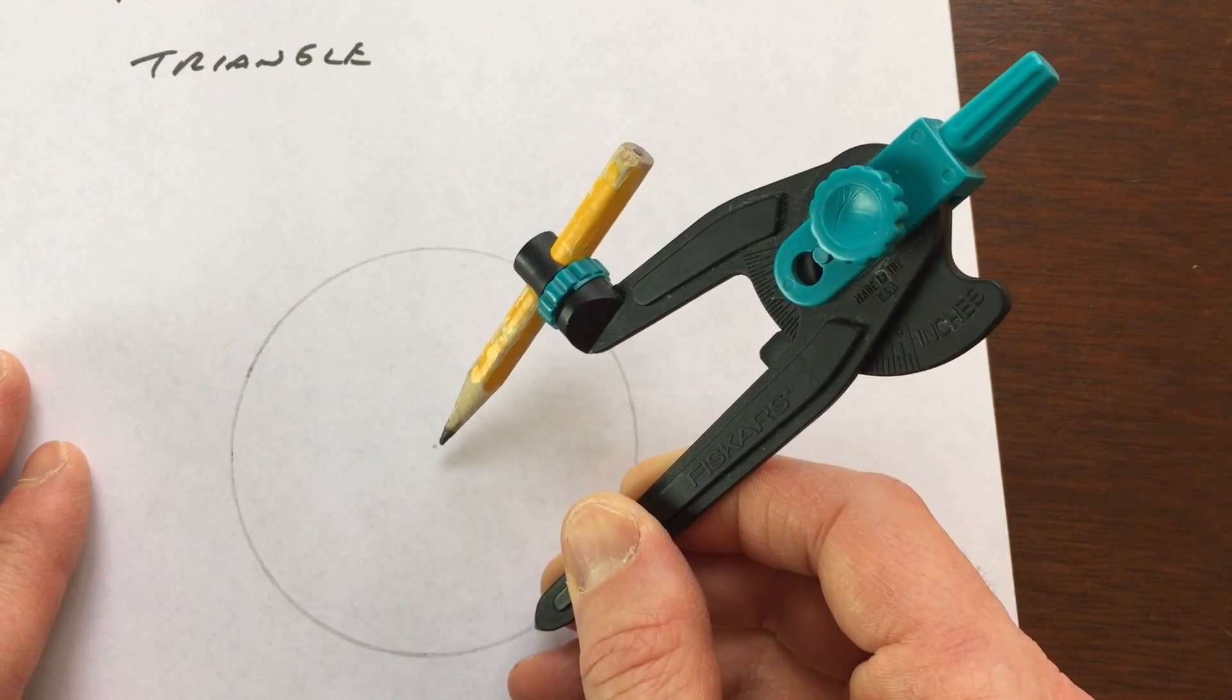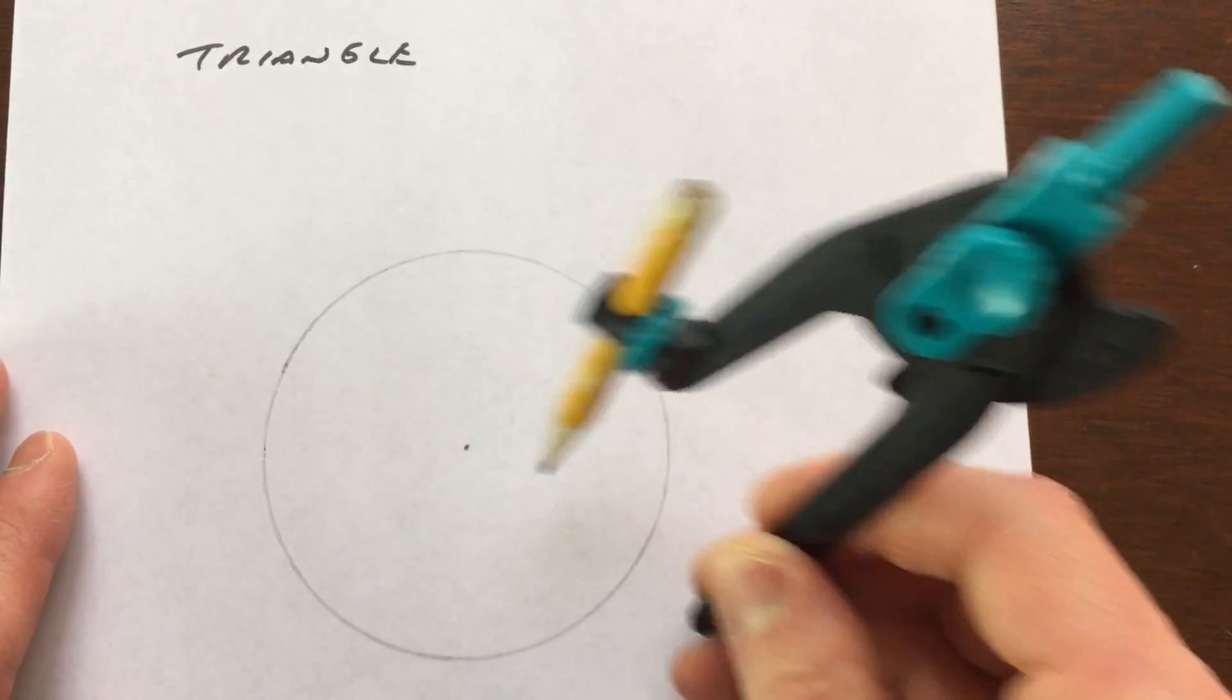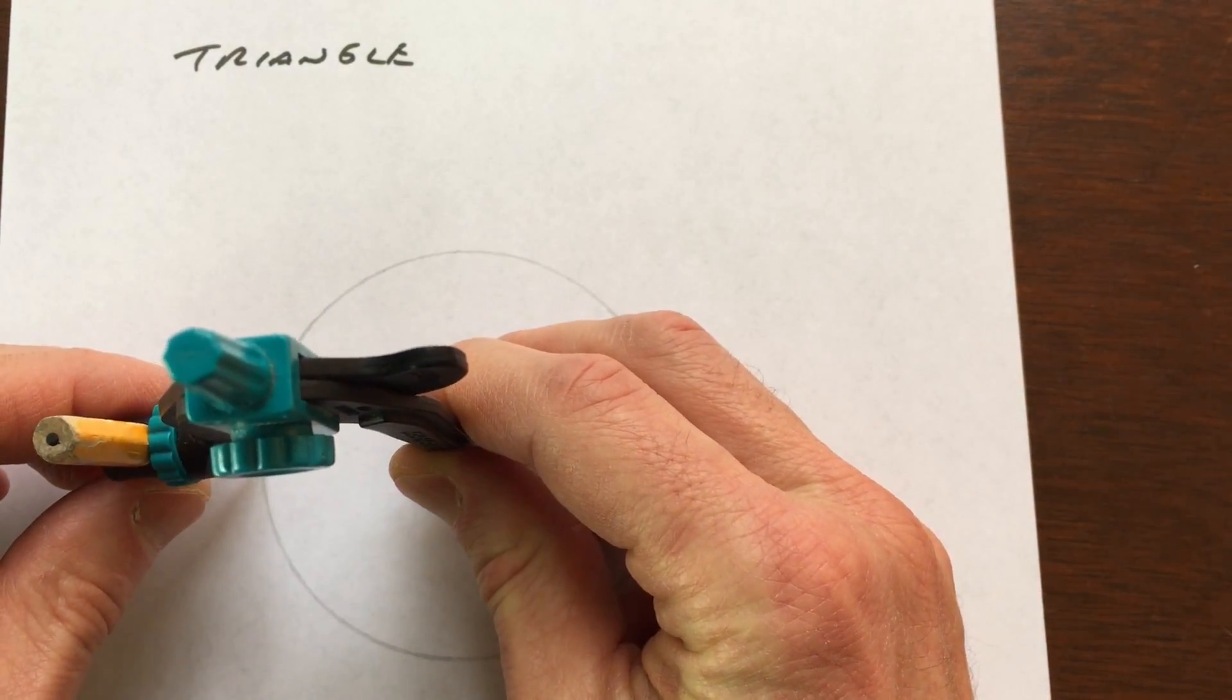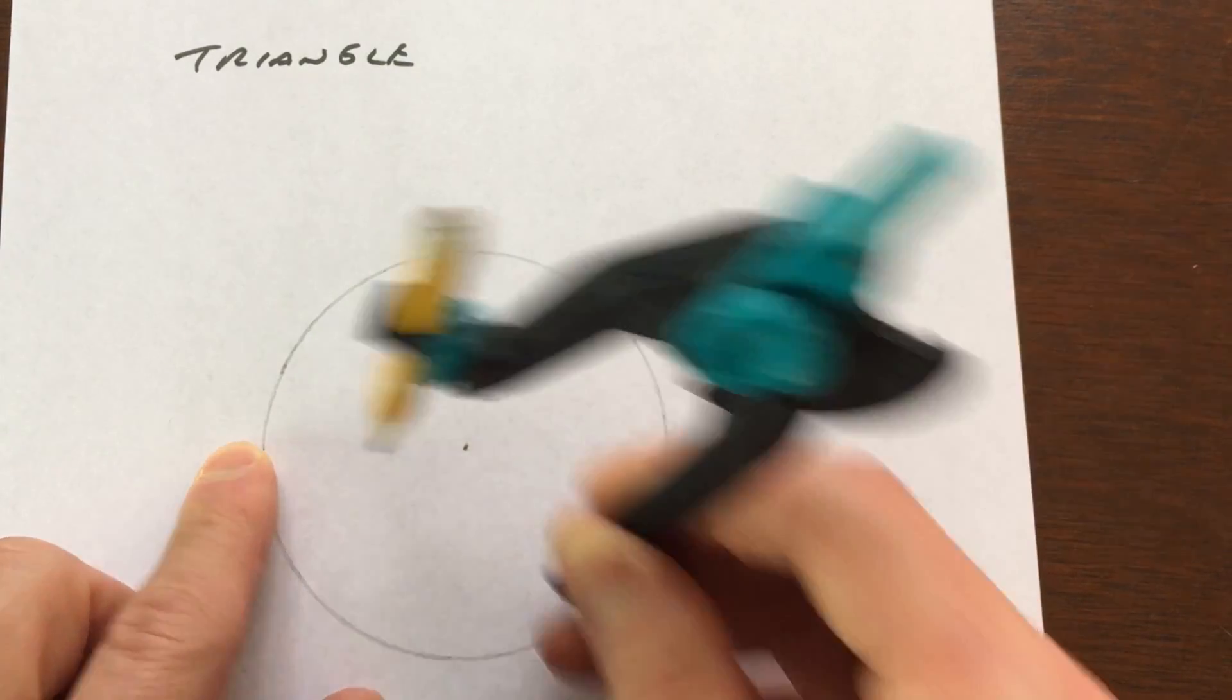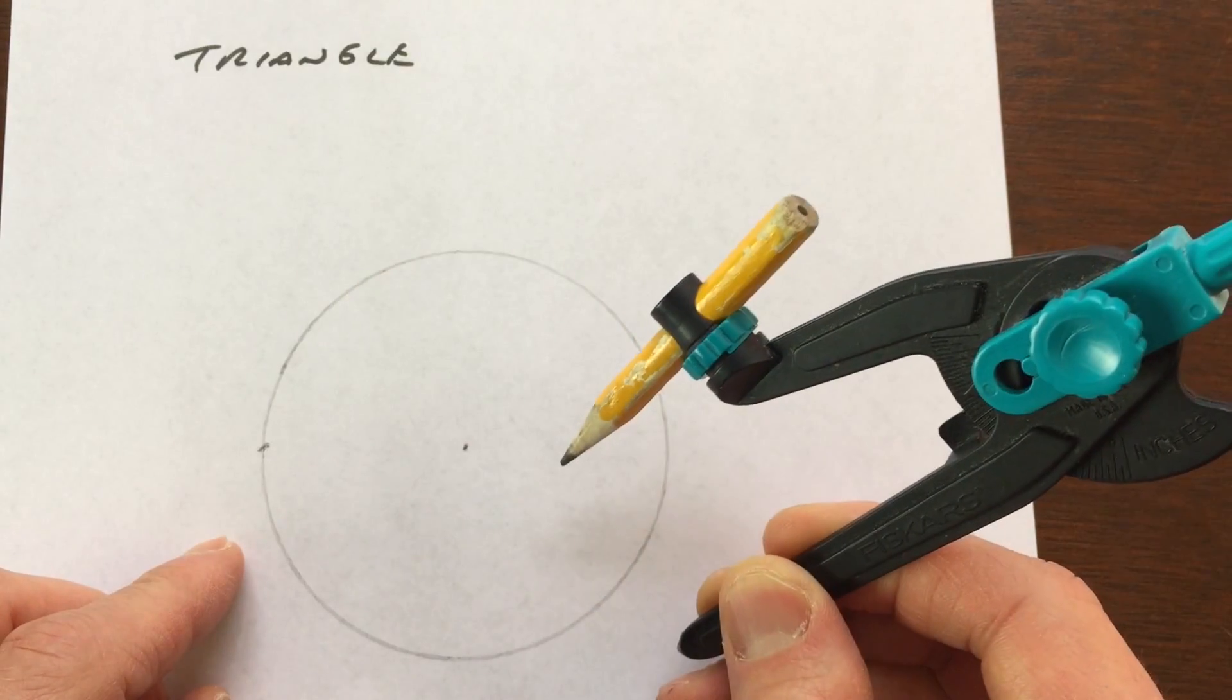Then you want to locate that center point. I'm just going to draw that in there. If they give you the circle, you're going to want to measure the radius using the compass. Open the compass enough so that it reaches from the center point to a point on the circle, then make a point right there on the circle.